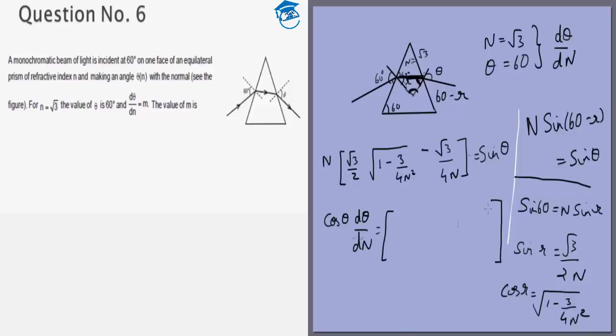So it will have a number of terms. First there will be the derivative of this. So there will be root 3 by 2 times 1 minus 3 by 4n square minus root 3 by 4n. Plus we will have n times root 3 by 2 times 1 minus 3 by 4n square.